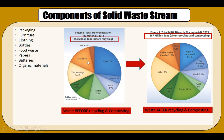After recycling and composting, 167 million tons still remain. So 254 million tons minus 167 million tons is how much was recycled, and that remaining amount went to the landfill. A lot of what goes to the landfill is paper and paperboard products, yard trimmings such as grass clippings, leaves, twigs, and small branches — about 8% — as well as metals, glass, and plastics, which potentially could be recycled.